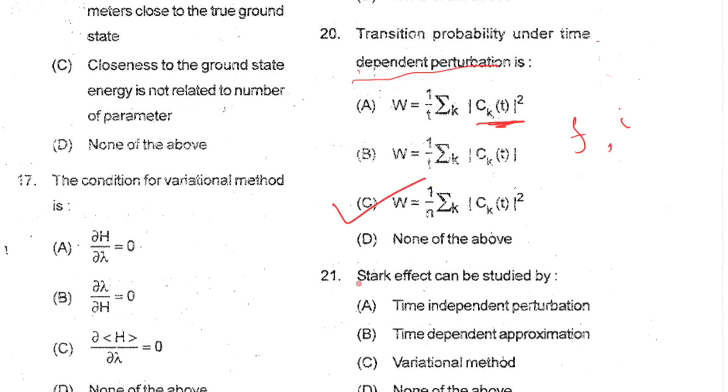Question number 21: Stark effect can be studied by time independent perturbation. So your correct option is option A. In Stark effect, an additional term qEx will be added to the unperturbed Hamiltonian. With this term, you can solve the Hamiltonian or Schrödinger equation using the time independent perturbation. So your correct option is option A.